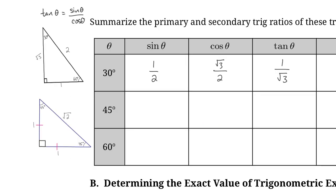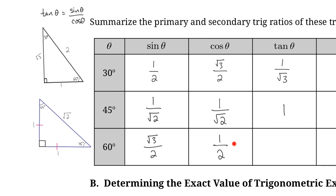Back to writing out these trig ratios: the sine of 45 degrees is equal to 1 over root 2, and the cosine of 45 degrees is also 1 over root 2. The tan of 45 degrees — that's sine over cosine — so that's 1 over root 2 divided by 1 over root 2, and that's just equal to 1. For our 60 degree angle: sine of 60 degrees equals root 3 over 2, cosine of 60 degrees is 1 over 2, and tan of 60 degrees — sine over cosine — is just root 3 over 1.